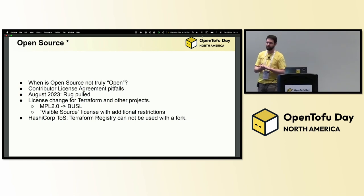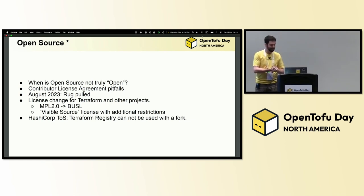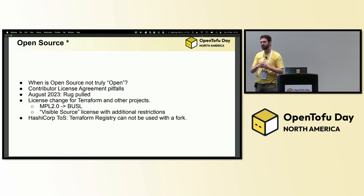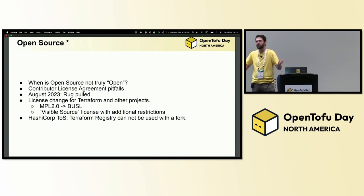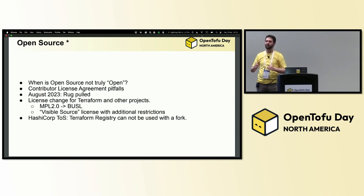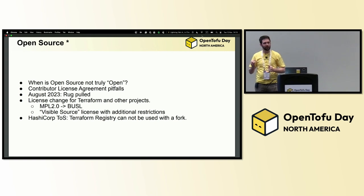In the case of Terraform, it switched from MPL 2.0 — a well-tested license used by a variety of projects around the world — to a business-oriented license. It's now visible source. You might not have heard that term before. Yeah, the code's still on GitHub — what's the problem? When you get into the licensing and into the ways that people develop code today, it gets really tricky very fast.